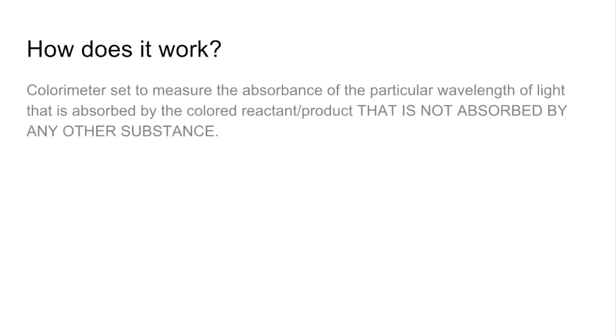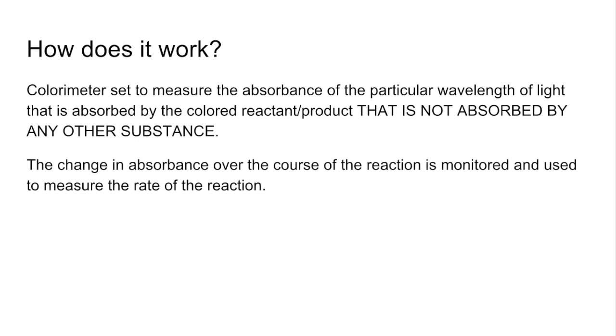How does it work? Well, the first thing you need to do is set the colorimeter to measure a particular wavelength of light—the absorbance of a particular wavelength of light—and it needs to be a wavelength that is only absorbed by this colored reactant or product, so it mustn't be able to be absorbed by any other substance in the reaction. Then the change in absorbance over the course of the reaction is monitored, and you can use that to measure the rate of the reaction.